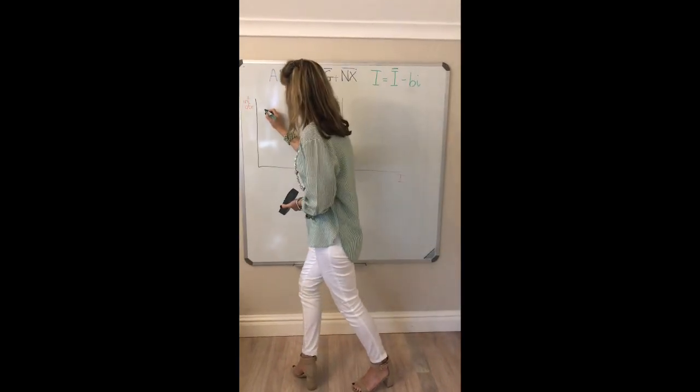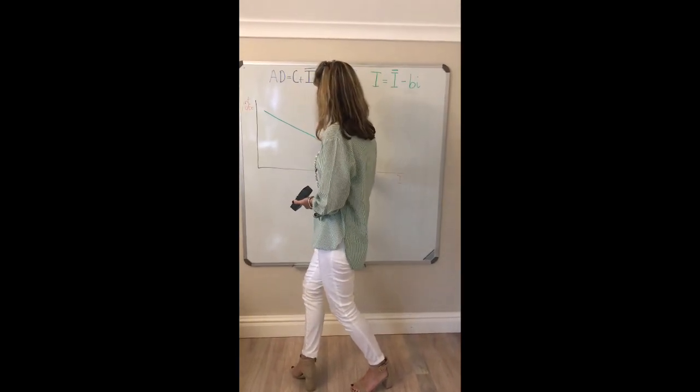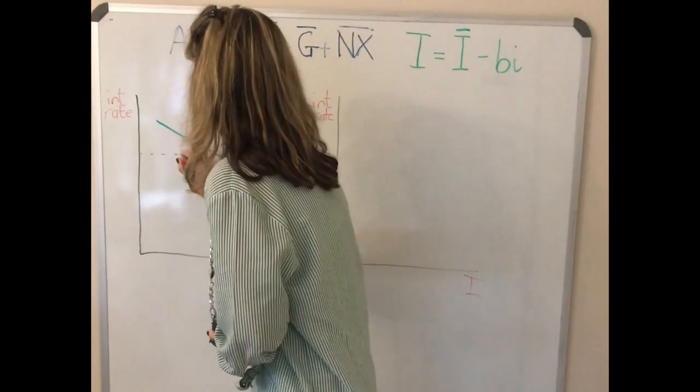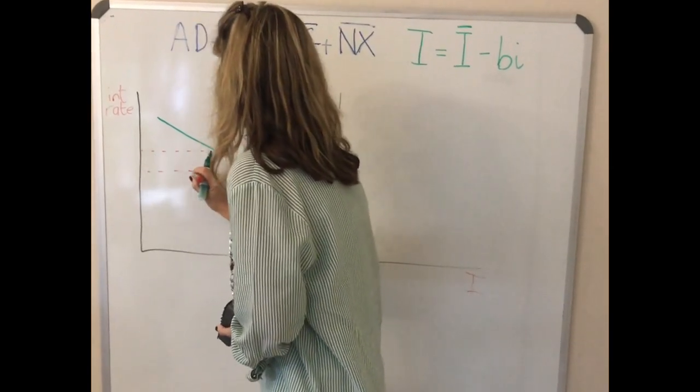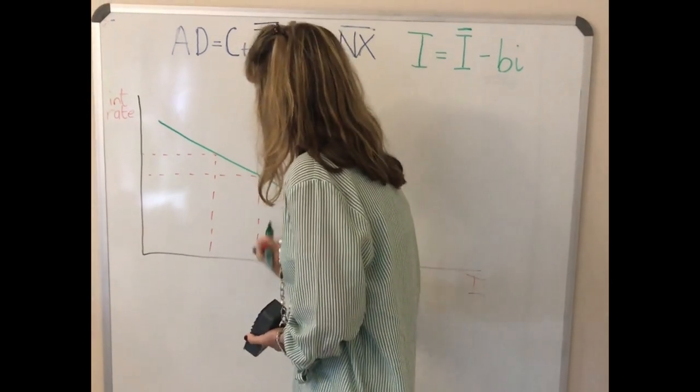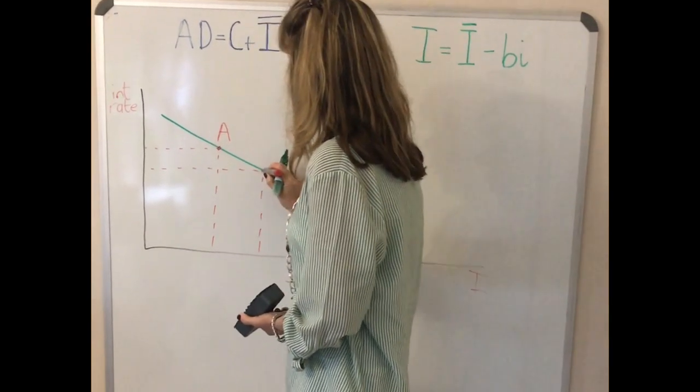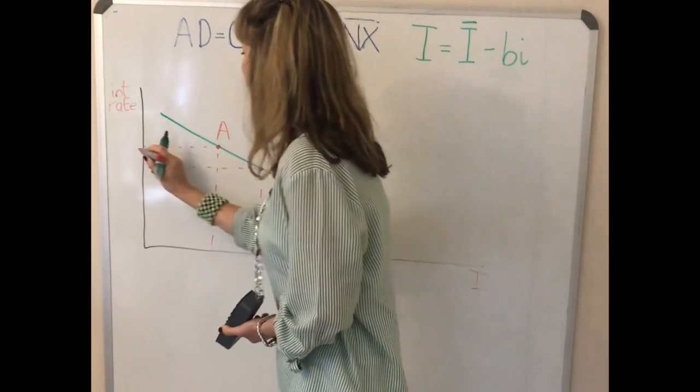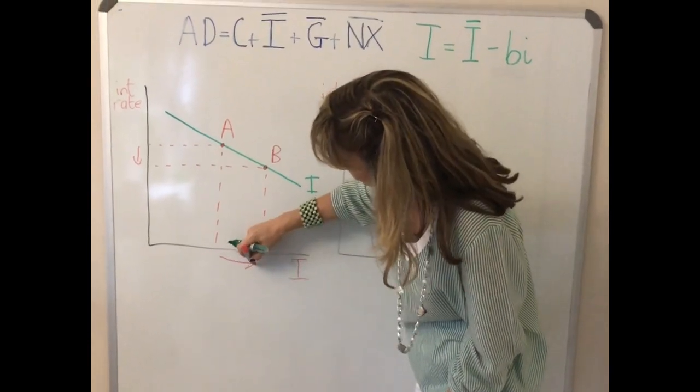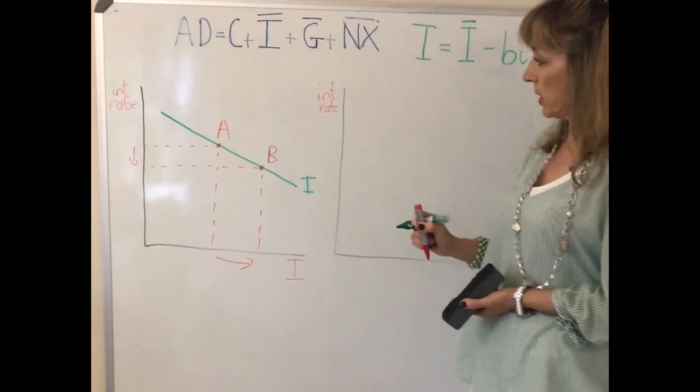So over here we could plot an investment schedule and we could see what happens if the interest rate say falls. We can take a given change in the interest rate and we move say from point A to point B. So as the interest rate falls we see that the level of planned investment spending rises.